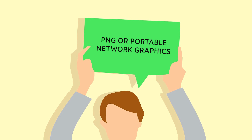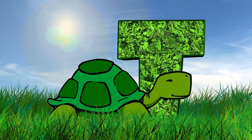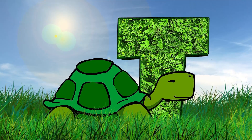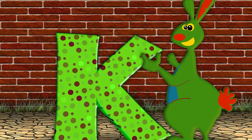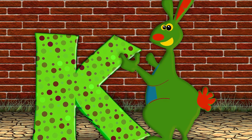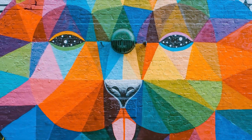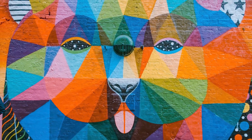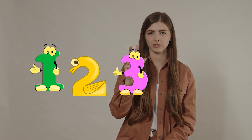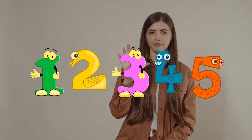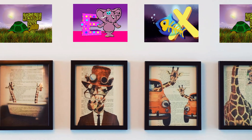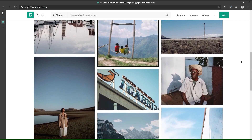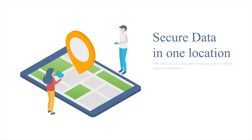PNG, or Portable Network Graphics, files are a lossless image format originally designed to improve upon and replace the GIF format. PNG files are able to handle up to 16 million colours, unlike the 256 colours supported by GIF. PNG files are best known for having transparent backgrounds, making them convenient for video productions, presentations, and graphic design. They are also suitable for multimedia creation software, web images, infographics, and presentations.